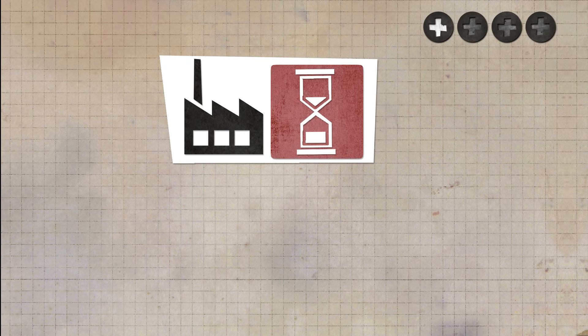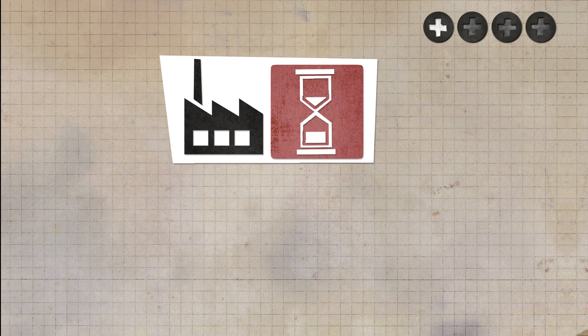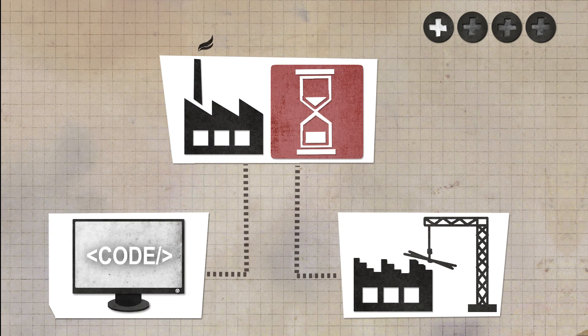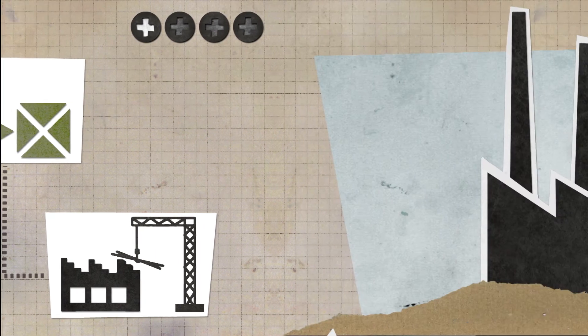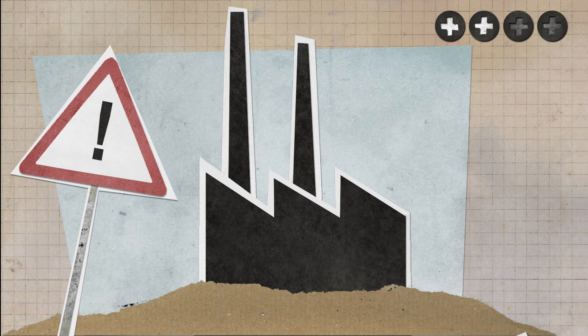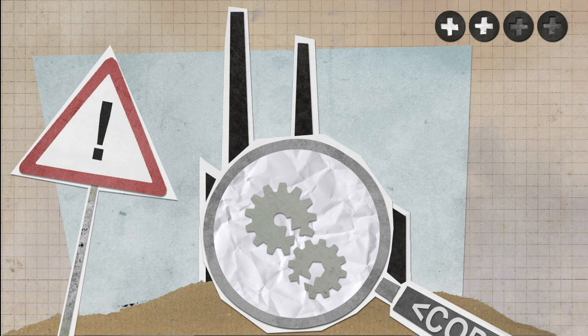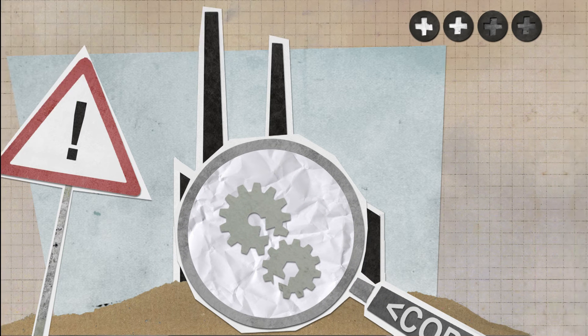It considerably reduces the commissioning periods as developing the control programs and constructing the plant take place concurrently. Problems concerning the construction of a new plant are fixed early enough, as the control programs are already available in an early phase of the project.